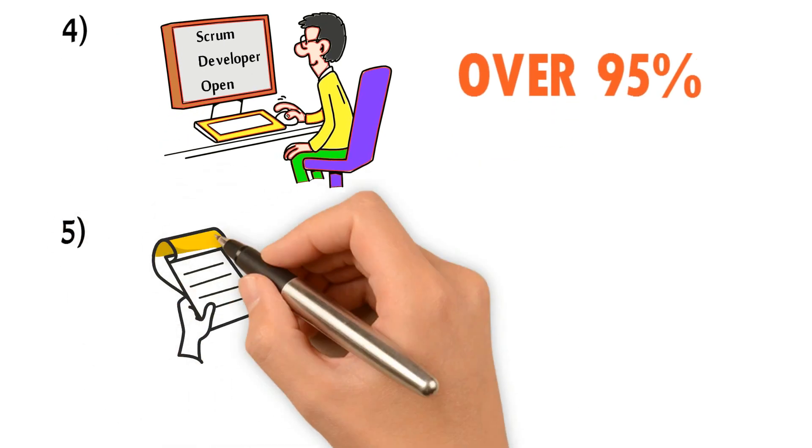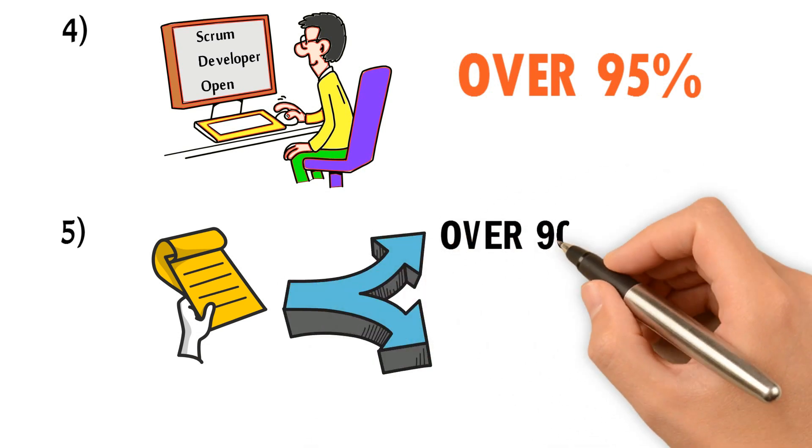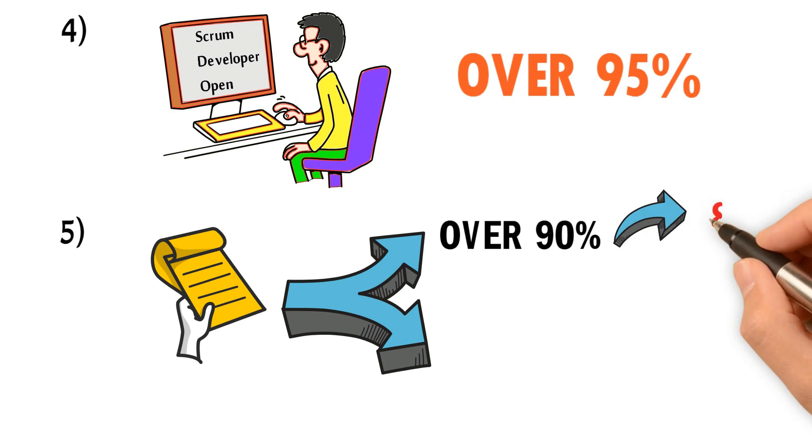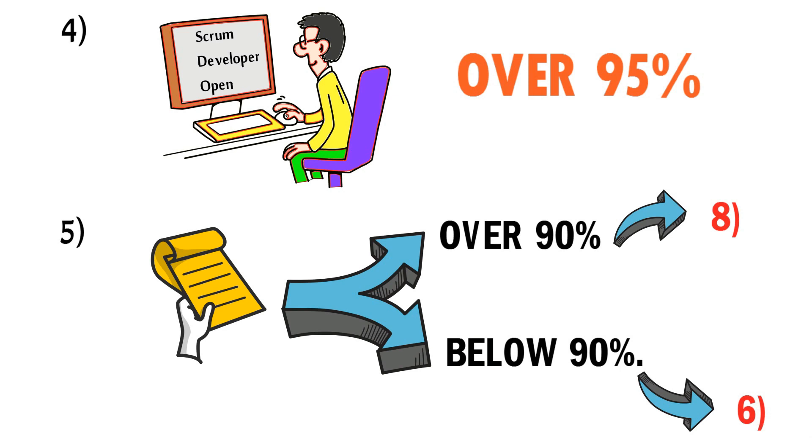Five, take mock exam number one. If you pass and score over 90%, then go to step number eight. If you score below 90%, go to step number six.